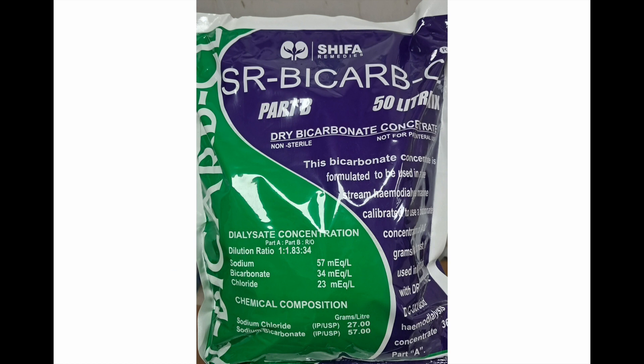This is the bicarb salt. The dialysate flow has two parts: acid and the bicarb. Two drums in front of the machine. This is part B or the bicarb solution, generally mixed in 50 liters. This is a dry bicarbonate concentrate, non-sterile, not for parenteral use. Dilution ratio is 1 to 1.83 to 34. Part A is acid (one part), part B is bicarbonate (1.83), and RO water is 34. The dialysate concentration should be 57 sodium, 34 bicarb and 23 chloride.